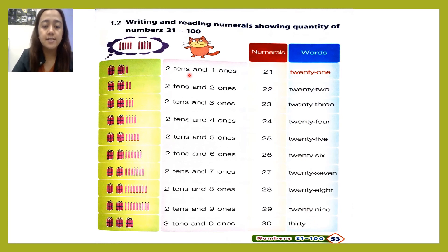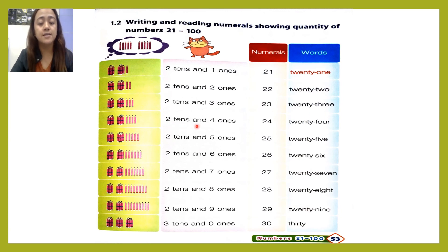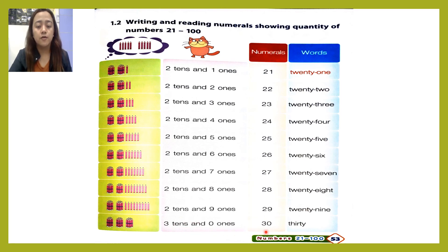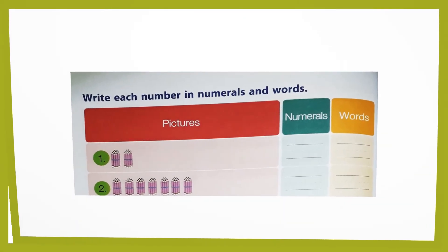Again, let's repeat. Two tens and one ones — twenty-one. Two tens and two ones — twenty-two. Two tens and three ones — twenty-three. Two tens and four ones — twenty-four. Two tens and five ones — twenty-five. Two tens and six ones — twenty-six. Two tens and seven ones — twenty-seven. Two tens and eight ones — twenty-eight. Two tens and nine ones — twenty-nine. Three tens and zero ones — thirty. Thank you.